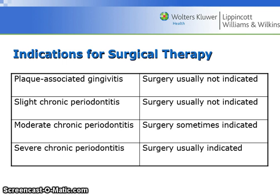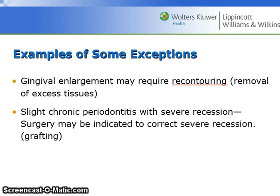Indications for surgical therapy: surgery is not usually indicated for plaque-associated gingivitis or slight chronic periodontitis. For moderate chronic periodontitis, surgery is sometimes indicated; for severe chronic periodontitis, surgery is usually indicated. Exceptions include gingival enlargement, which may require recontouring through removal of excessively proliferated tissues, and slight chronic periodontitis with severe recession, which could require surgery to correct the recession, such as grafting.